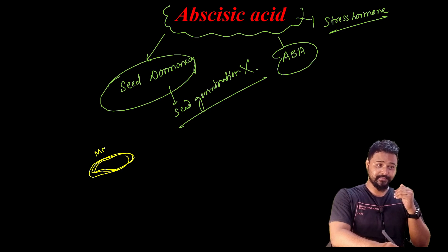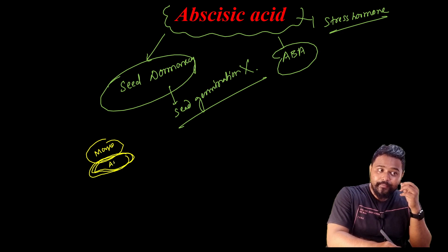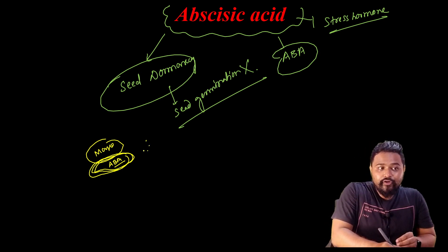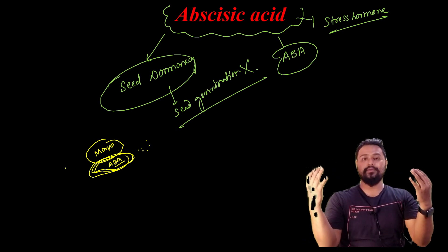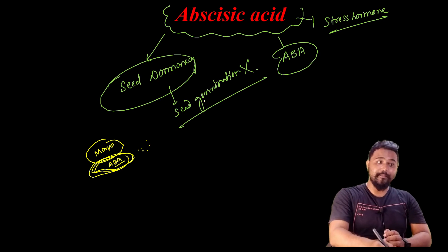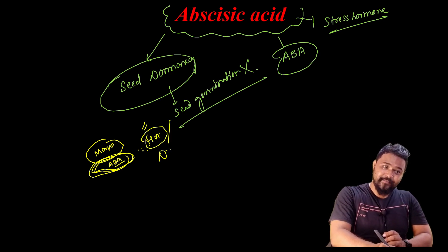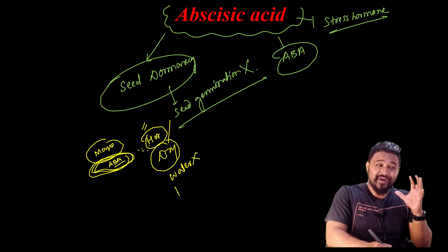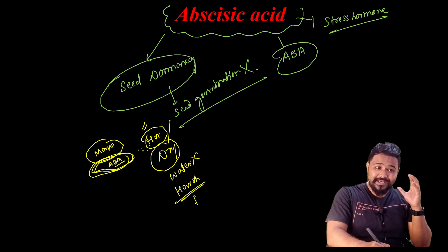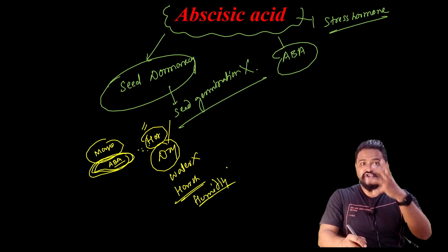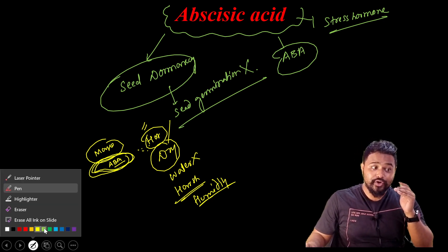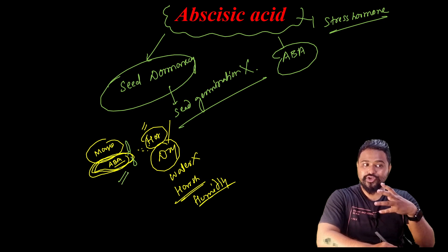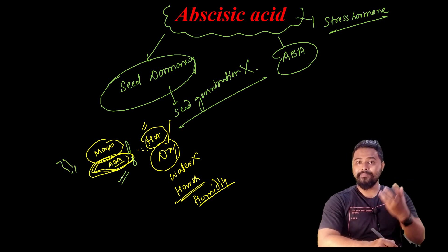Consider a mango seed. The area is very hot and dry — no water, very harsh conditions. Humidity is very low. So when environmental conditions are unfavorable or stressful, the plant enters a state of dormancy.